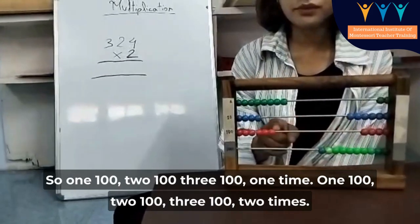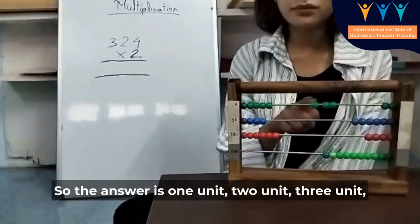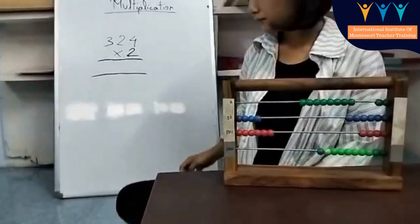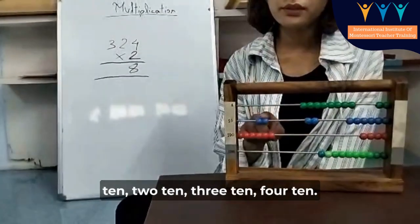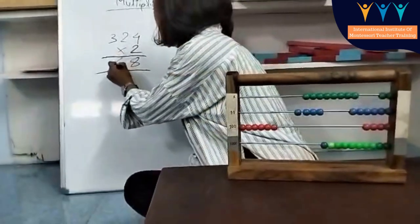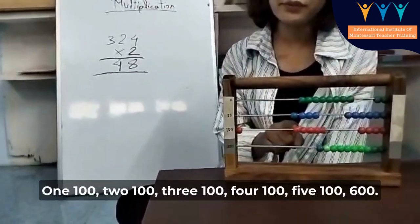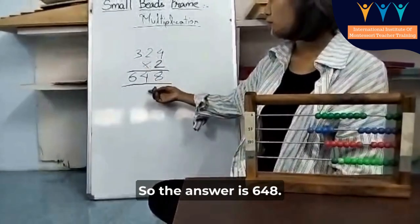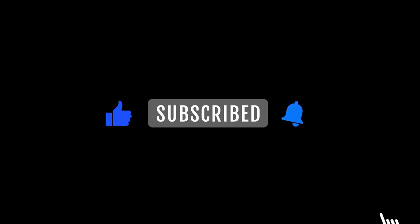So counting the units: one, two, three, four, five, six, seven, eight units. On the tens: one, two, three, four tens. On the hundreds: 100, 200, 300, 400, 500, 600. So the answer is 648.